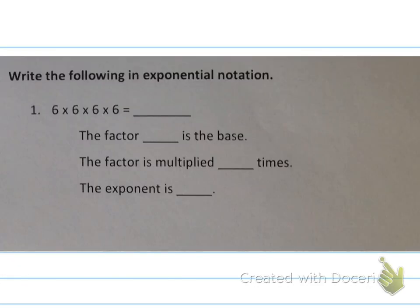Let's get in a little bit of practice here, writing these problems in exponential notation. So the first one we have is 6×6×6×6. Let's go ahead and identify the factor first. What is being multiplied here? Well, the number 6. So that's the factor.